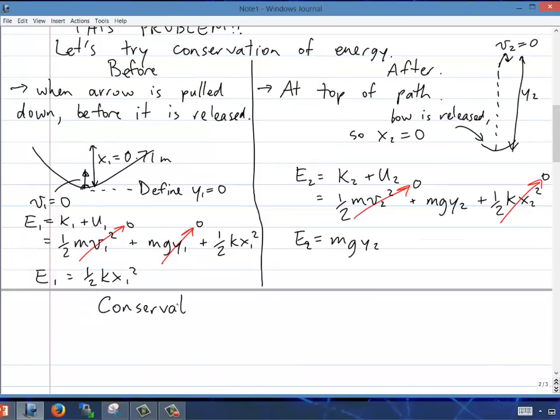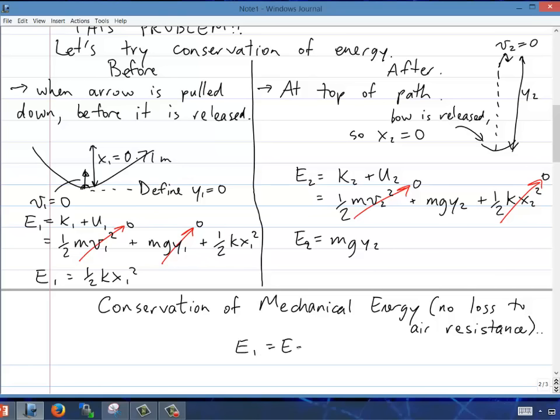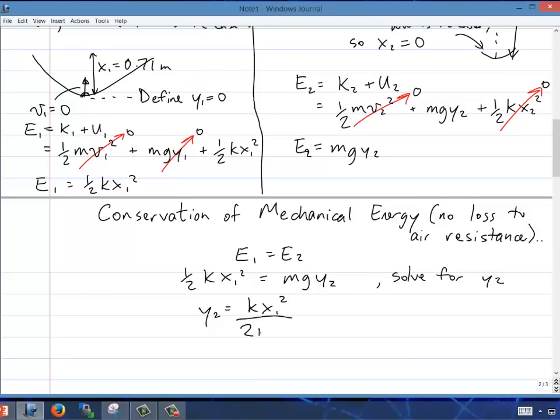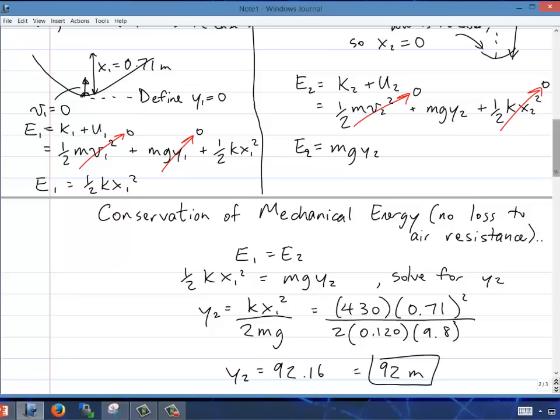Now we just apply conservation of mechanical energy. We're assuming here that there's no loss due to air resistance. So E1 = E2. That's our equation. We got ½kx1² = mgy2. And now we just solve for y2. So it's pretty simple, just rearrange: y2 = kx1²/(2mg). We can plug in all the numbers we have in SI units, of course. Plugging that all into my calculator, I got 92.16, so that rounds to 92 meters.